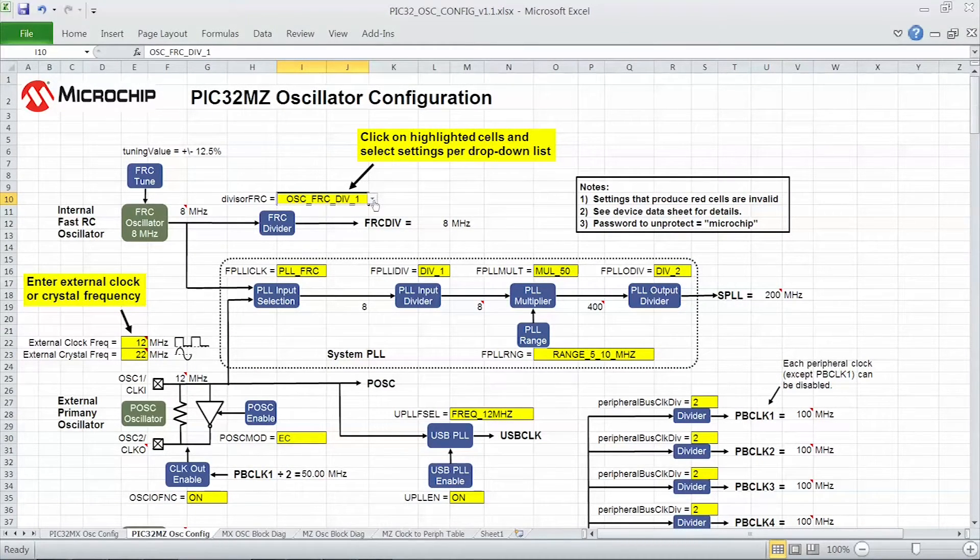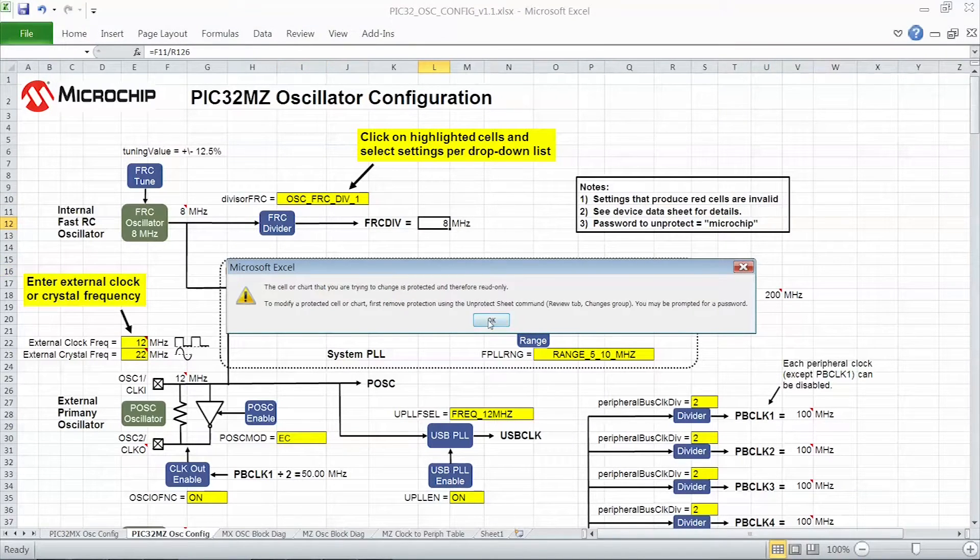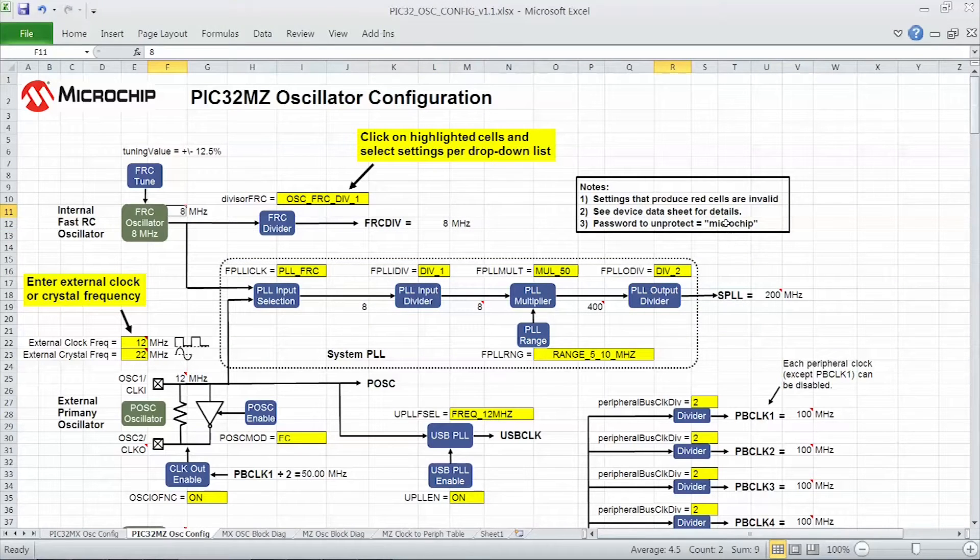The only cells you should be changing in this spreadsheet have been highlighted in yellow, and all possible settings are provided in each drop down list. Now if you want to change a protected cell for some reason, I've provided the password here for you.